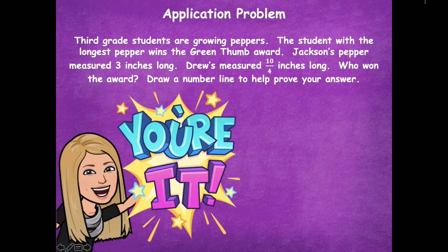Pause the video, draw your number line, and find where each one would be — where would Jackson's pepper that's three inches long be modeled, and where would ten-fourths inches long also be modeled? That will help you determine who won the award. Pause, solve, and then click play when you're ready to go over it together.